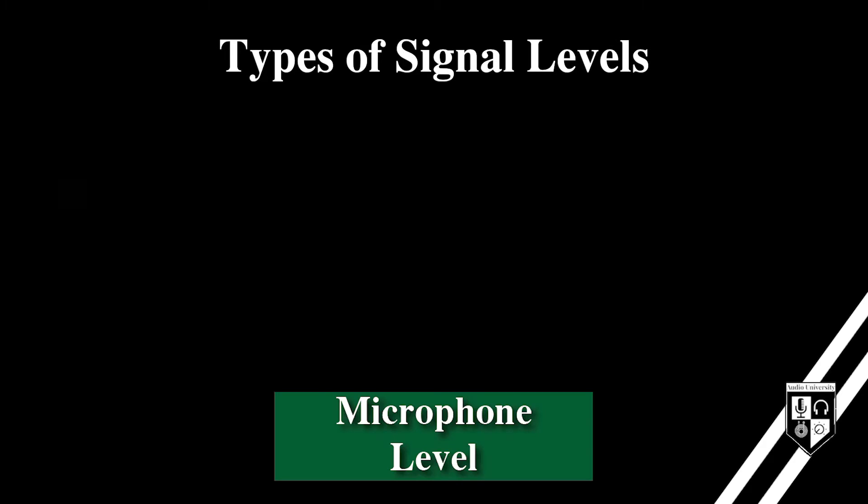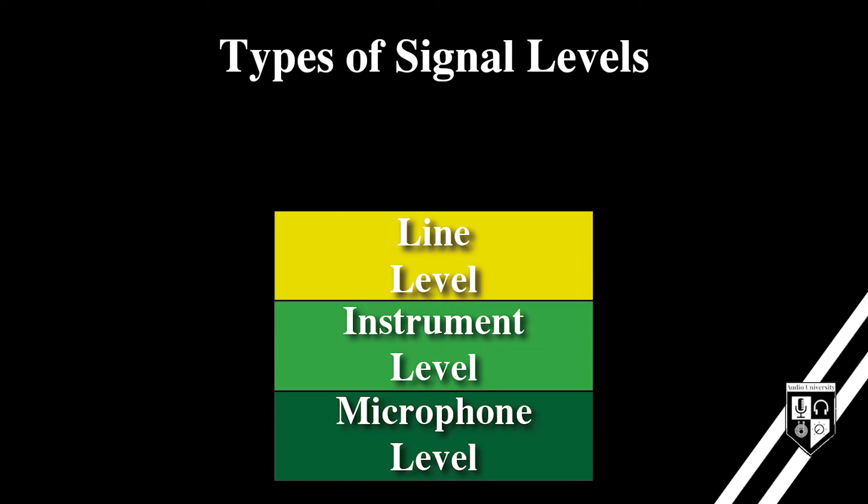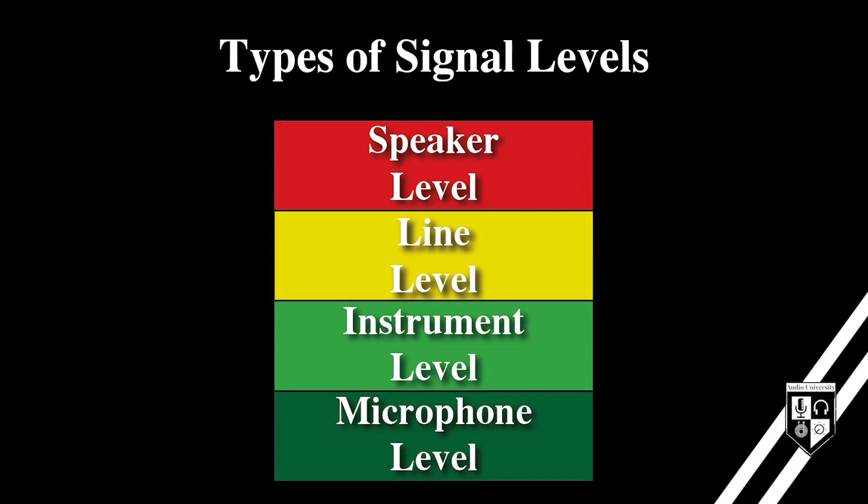In pro audio, you'll generally be dealing with four types of signal levels: mic level, instrument level, line level, and speaker level.